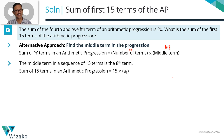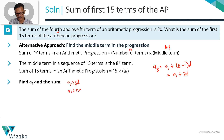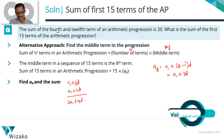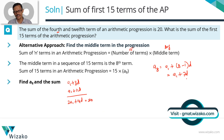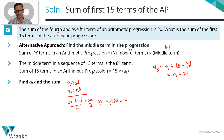A8 equals A1 plus 8 minus 1 times d, which is A1 plus 7d. Using the same process as before: A4 equals A1 plus 3d, A12 equals A1 plus 11d. Adding these gives 2A1 plus 14d, which equals 20. We need A1 plus 7d, and we have 2A1 plus 14d. Dividing the entire equation by 2 gives A1 plus 7d equals 10. So A8 equals 10, and the sum of the first 15 terms is 15 times 10, which equals 150.